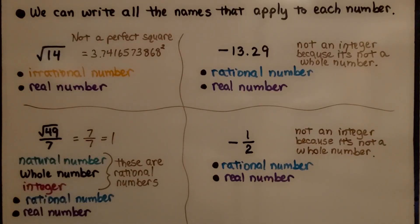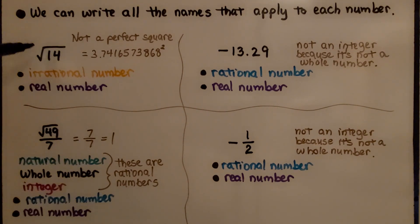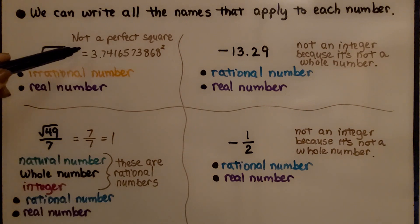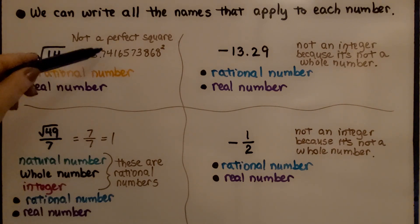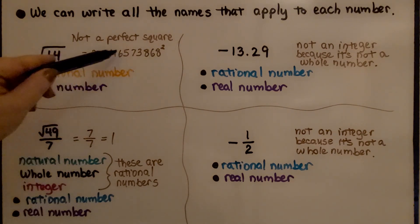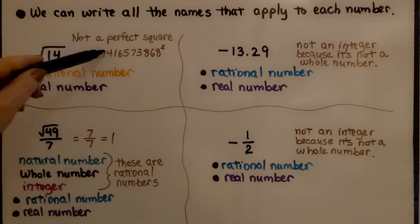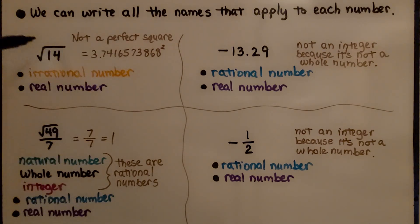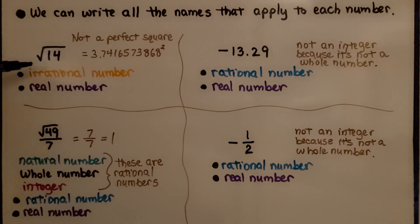We can write all the names that apply to each number. Here we have the square root of 14. It's not a perfect square because we would have to multiply 3.741 and all of these decimal digits squared in order to get the square root of 14. That's not a perfect square, so this is irrational. It's an irrational number and a real number because irrational numbers are part of real numbers.